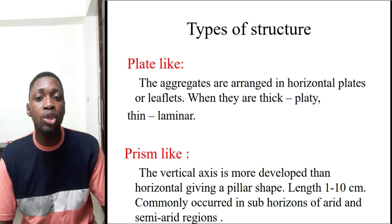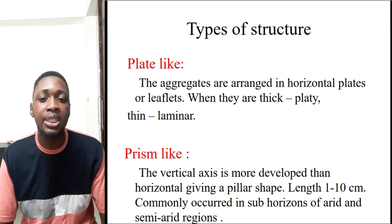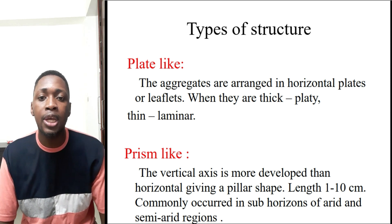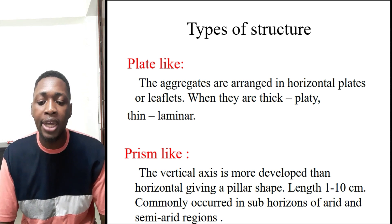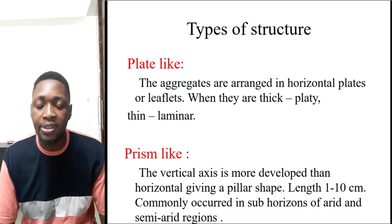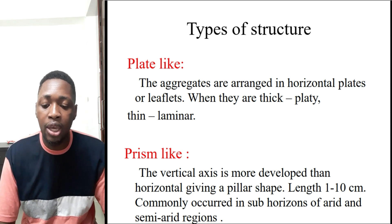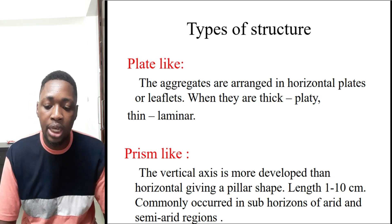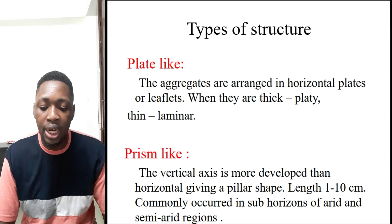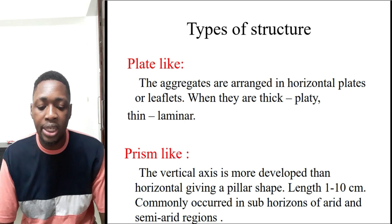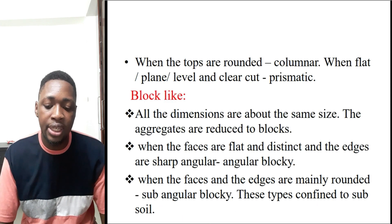We have the plate-like type, whereby the aggregates are arranged in horizontal plates or leaflets. We also have the prism-like type, whereby the vertical axis is more developed than the horizontal, giving a pillar shape with a length of 1 to 10 cm. This commonly occurs in sub-horizons of arid and semi-arid regions.